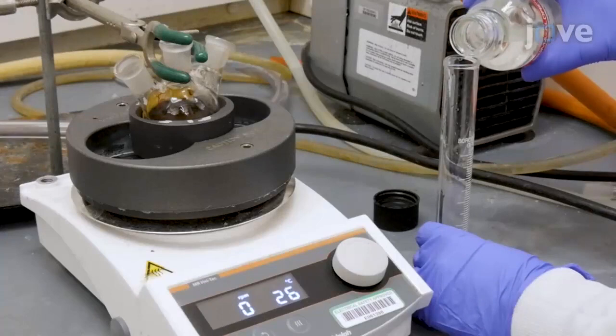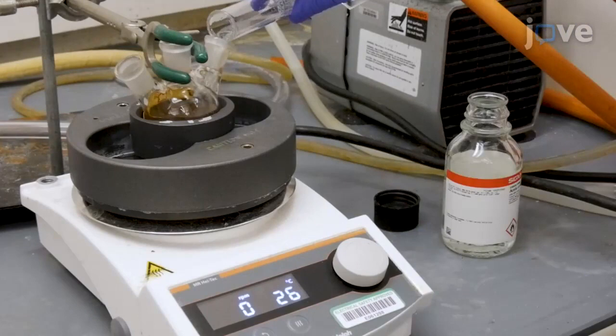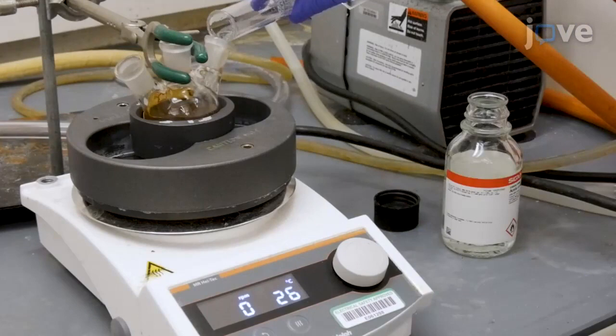First, add 40 mL of glacial acetic acid to a 50 mL three-neck round-bottom flask containing 0.75 g of palladium acetate and a stir bar.